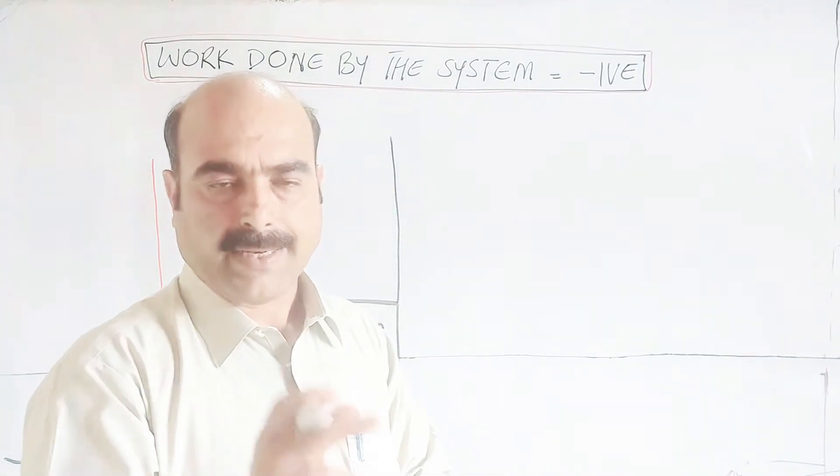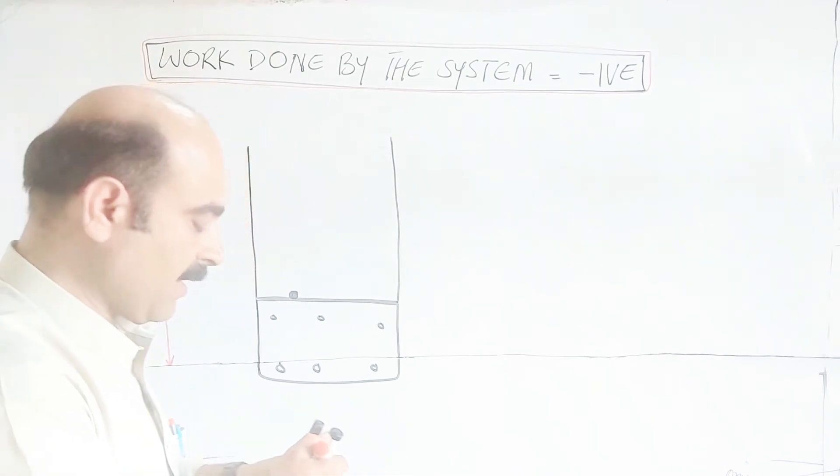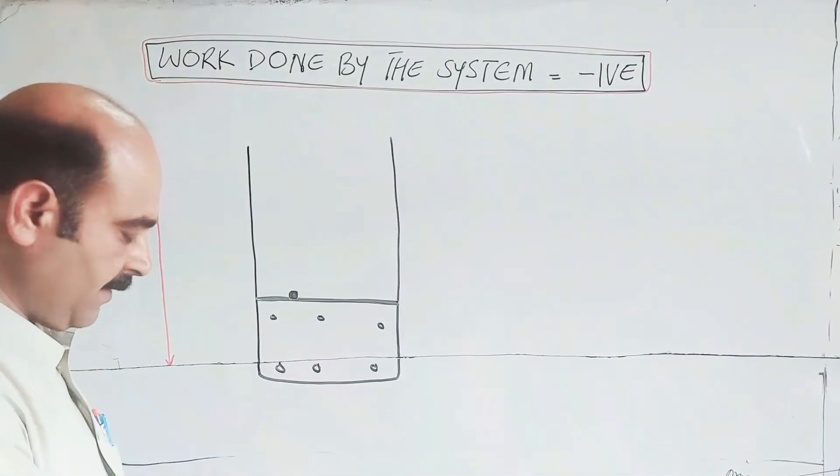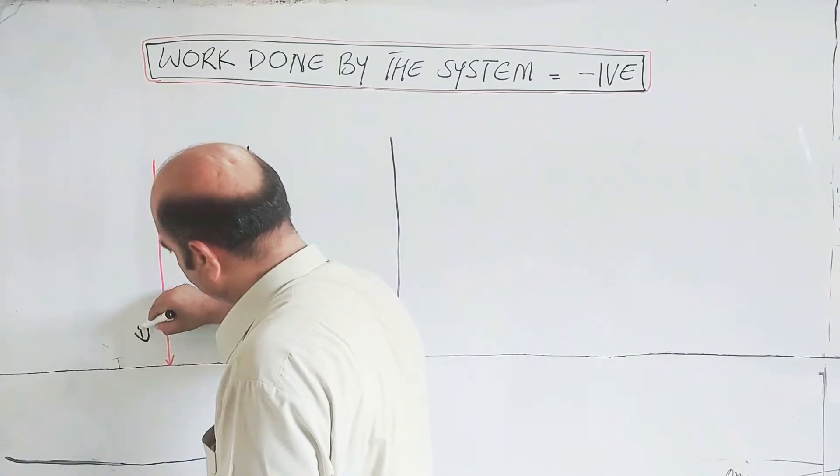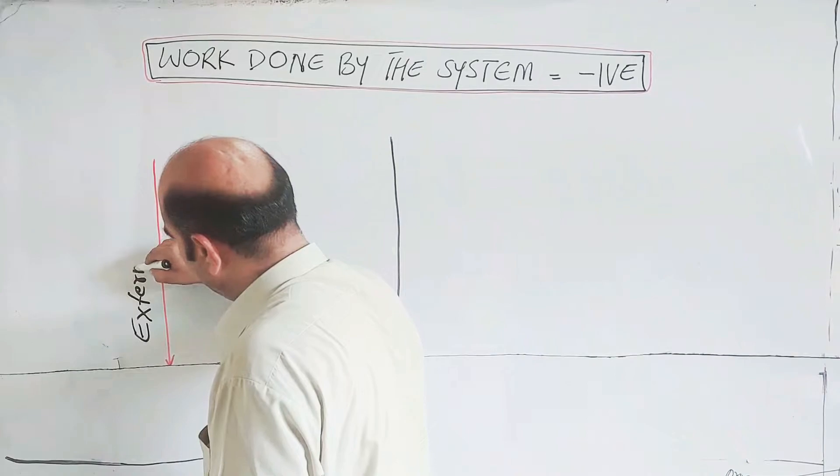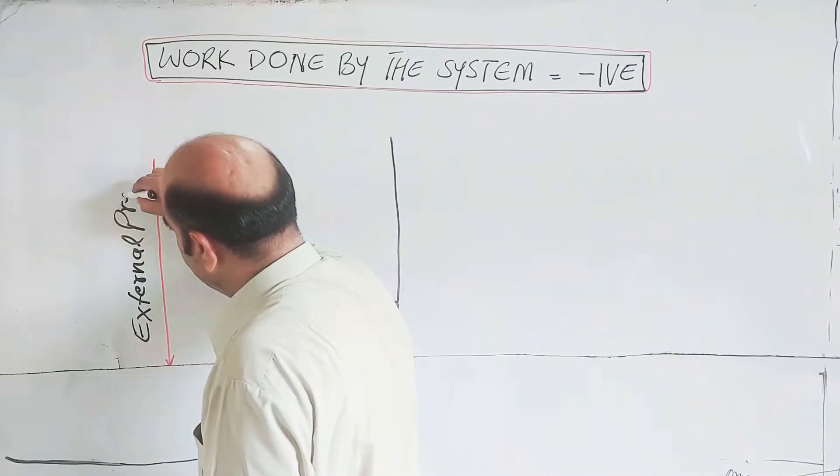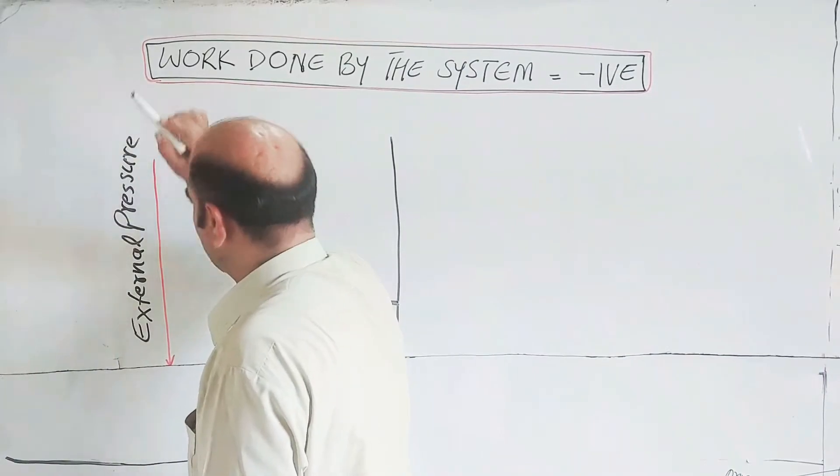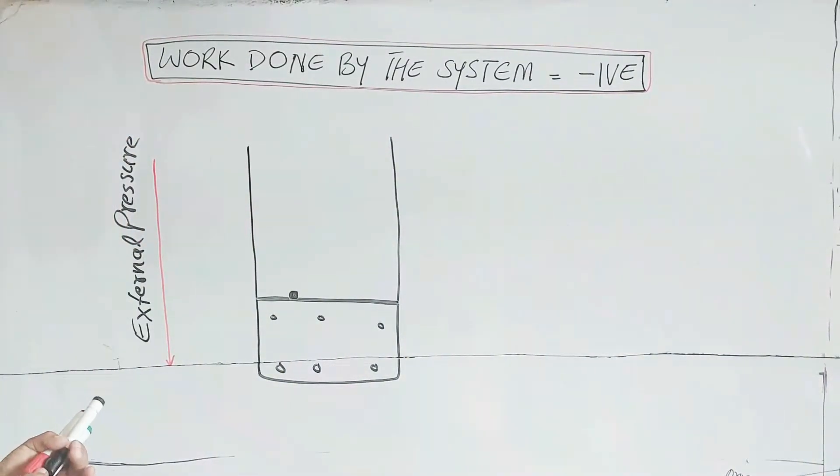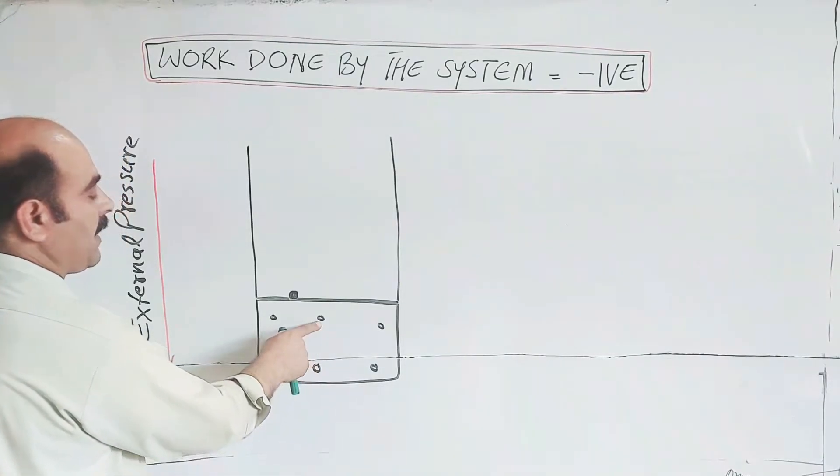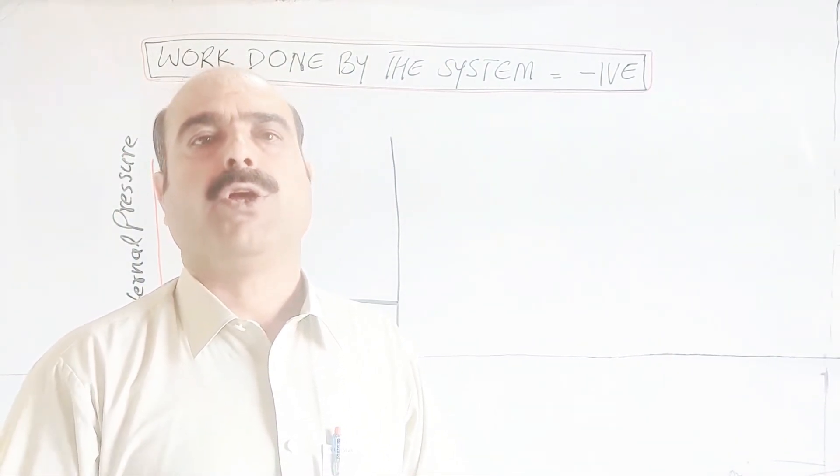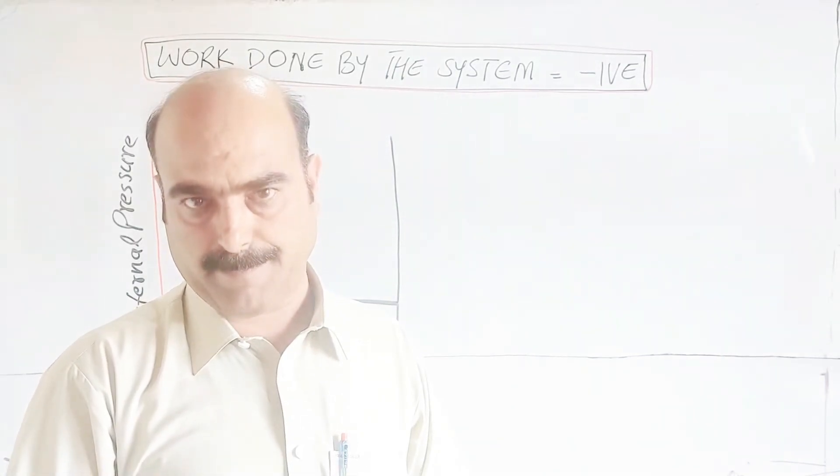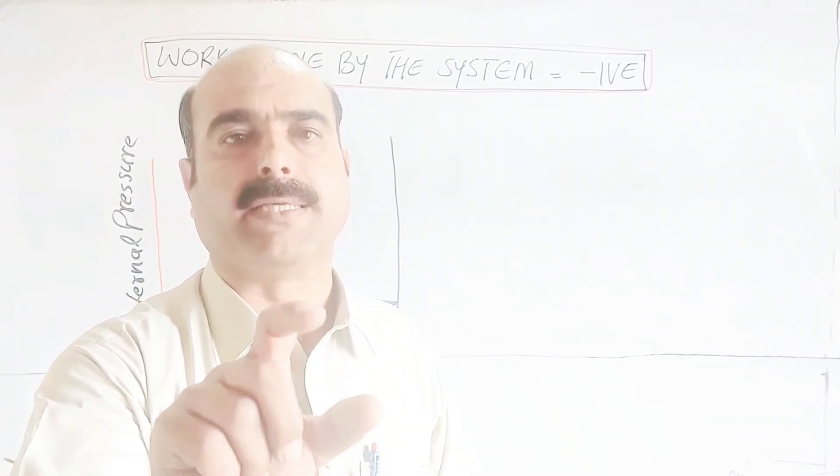External pressure acts in downward direction. External pressure cannot be neglected. The external pressure is acting downward. The molecules in the container strike the walls of the container and piston, and the force supplied per unit area, the force per unit area, this is called pressure.